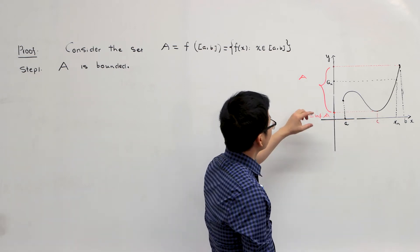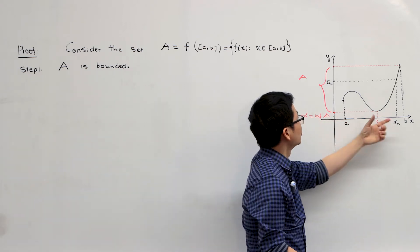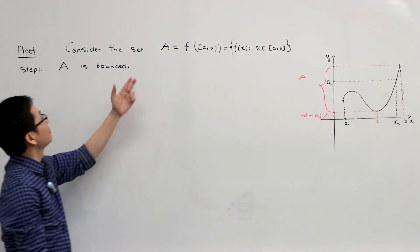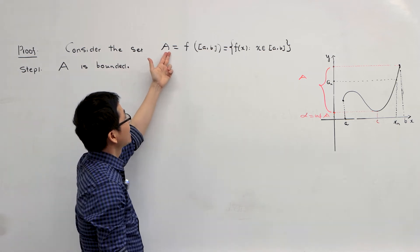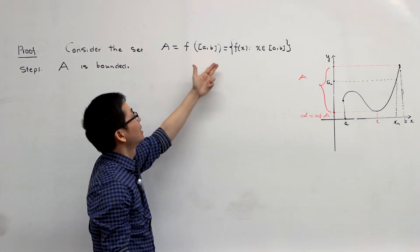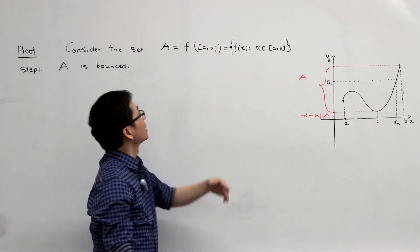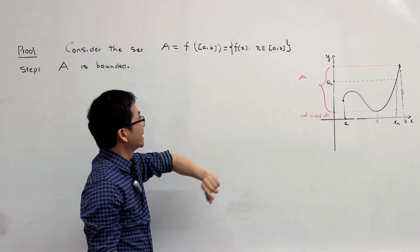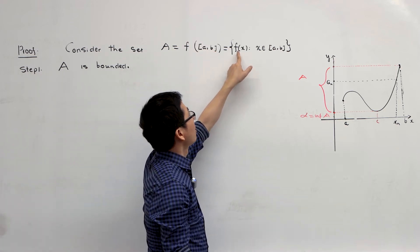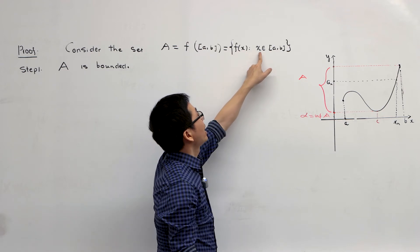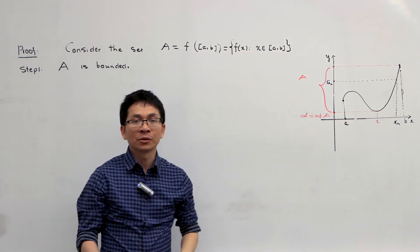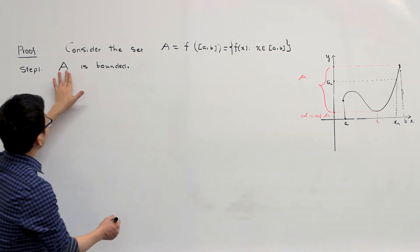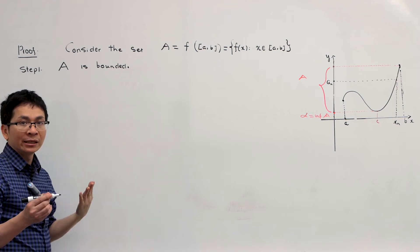We are going to focus on the range of the function within the interval from a to b. In the first step, we define the set A as the range of the function in the interval a b. So A is just f of [a,b], meaning that A is the set of all possible outputs where the inputs are in the closed interval from a to b. In the first step, we will show that A is a bounded set in R.